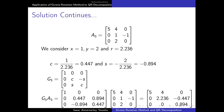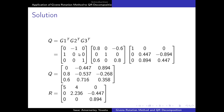Having obtained the right upper triangular matrix R, we now want to find Q, the unitary matrix. In step 1 we obtained G1 — we transpose it. In step 2 we obtained G2 — we transpose it. In step 3 we obtained G3 — we transpose it. When we multiply all these transposed matrices together we get our Q matrix, the orthogonal matrix. When we multiply Q and R we get back our original matrix A.